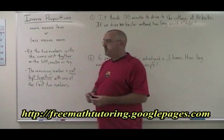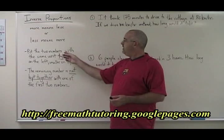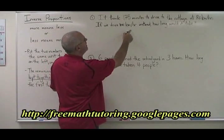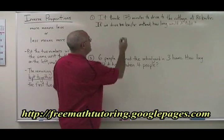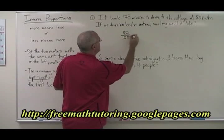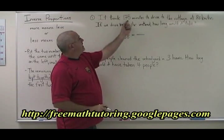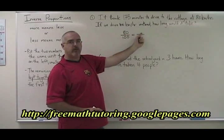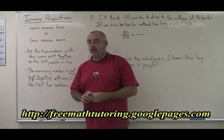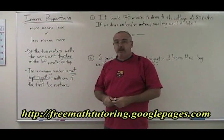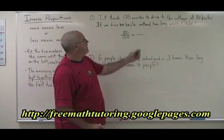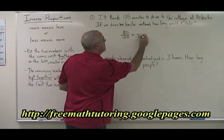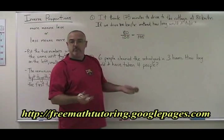How do you solve inverse proportions? The first rule is the same: put the two numbers with the same unit together on the left, smaller on top. With example one, we have 80 km per hour and 100 km per hour — those are the two numbers with the same unit. We put them together on the left, smaller one on top. The third number is 175 minutes. In a direct proportion, 175 goes with 80 on top. But for an inverse proportion, the remaining number is not kept together with one of the first two numbers. So the 175 goes with the 80 in the problem, but because it is inverse, we put it on the bottom so it is not together on top with the 80.